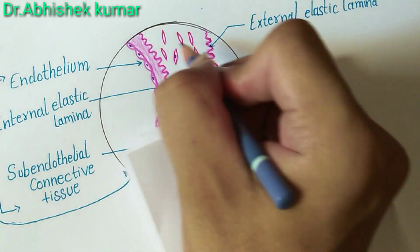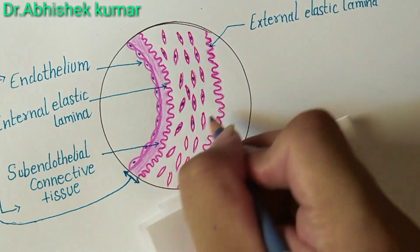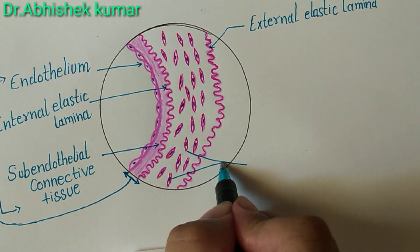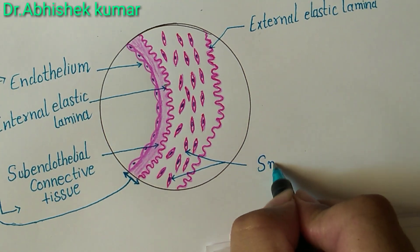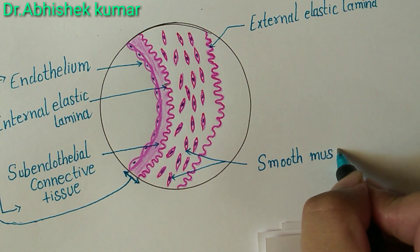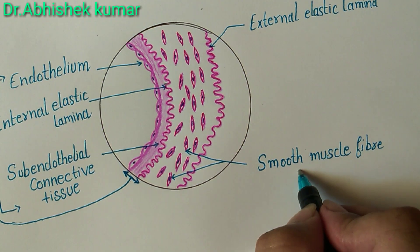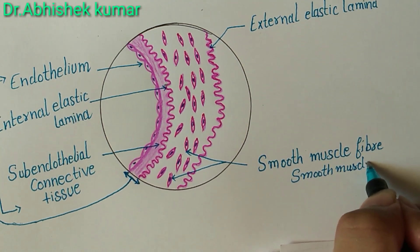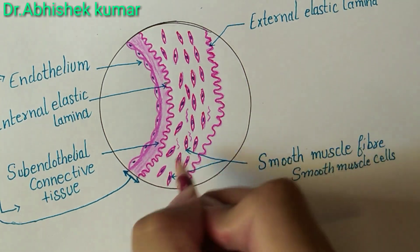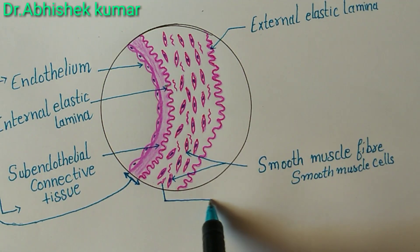Here we are making the nuclei in the smooth muscle cells. Because of smooth muscle cells present in abundant amount in the tunica media layer, that's why we call this slide muscular artery — due to the presence of smooth muscle fibers or smooth muscle cells. In this layer, not only smooth muscle cells, but also very few elastic fibers are present.